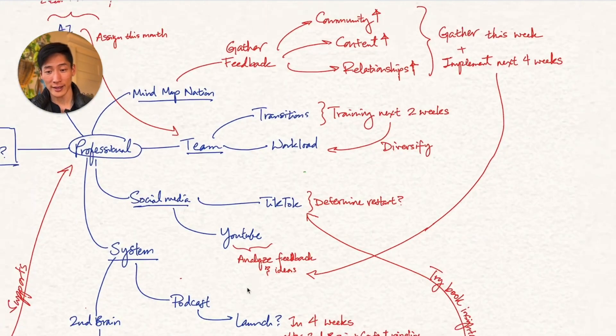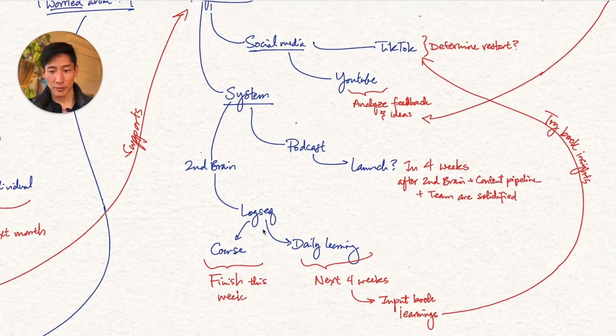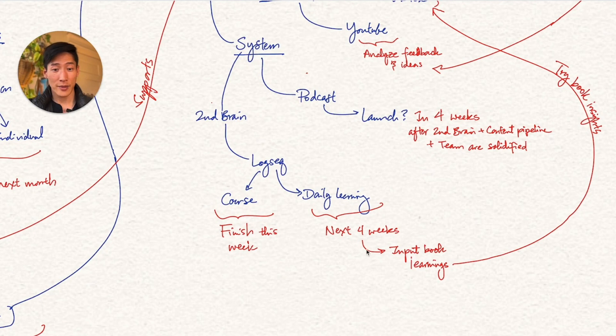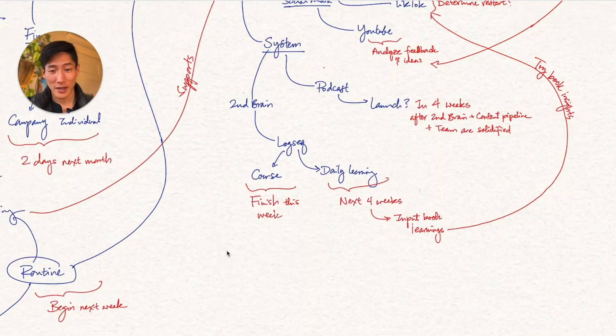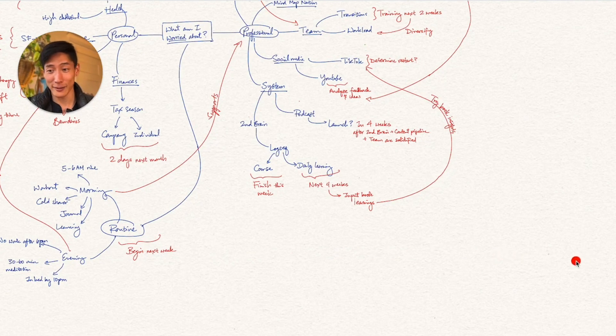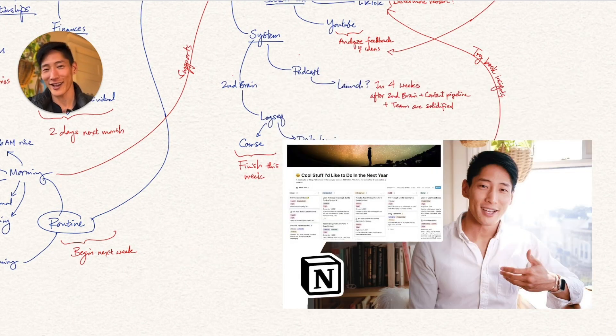Under SecondBrain, I plan on finishing the LogSeq course this week, and then begin using it over the next four weeks to start building out my knowledge base. If I'm able to do that, then at the end of the four weeks, after my second brain is built, and my content pipeline looks good, and my team is solidified, I can begin working on the podcast. So there's a sequence in which I'm taking these actions. If I really want to get fancy, though, I could draw a linear timeline with all these different actions, or even put it into a Nosho Kanban board, which I have actually gone through in a previous tutorial. So definitely check that out if you're interested.